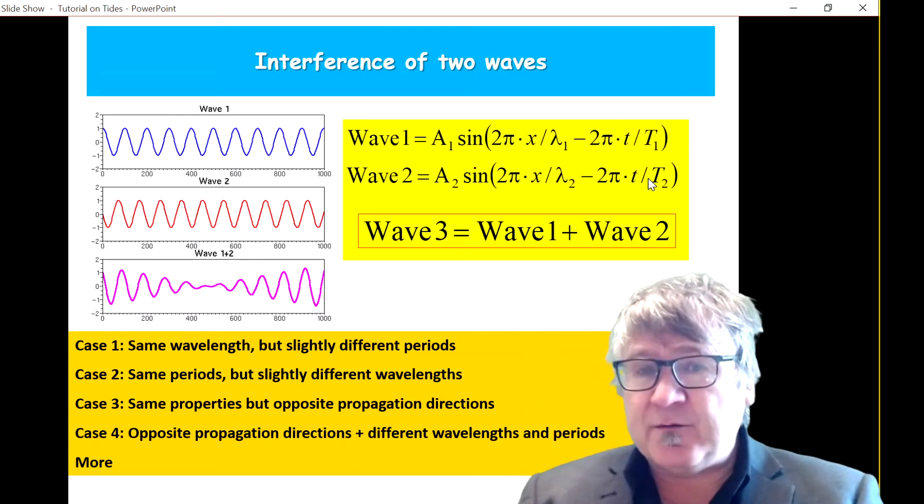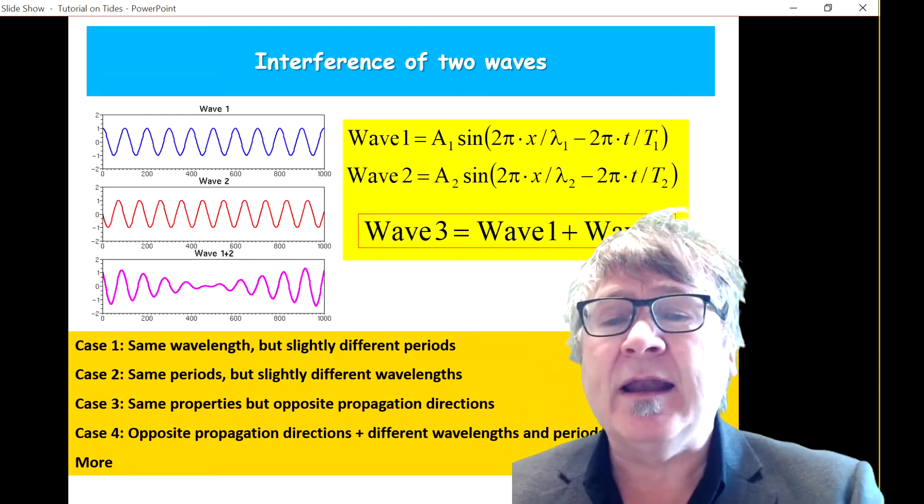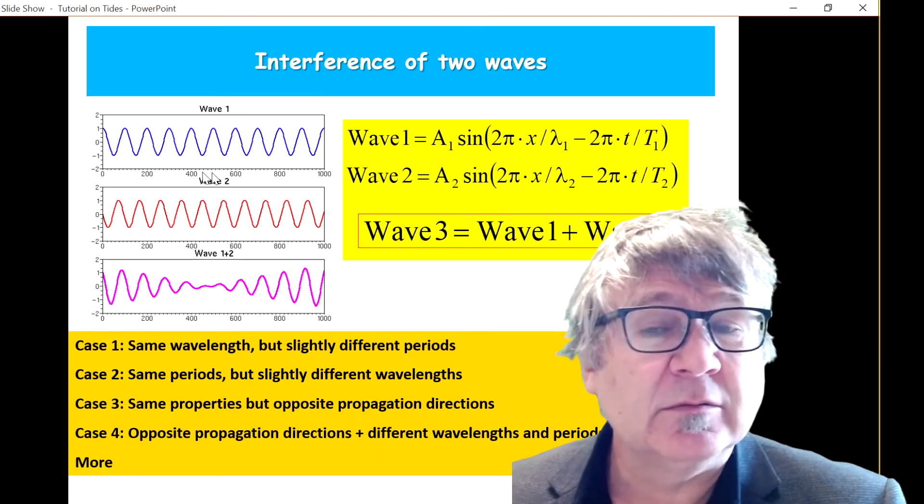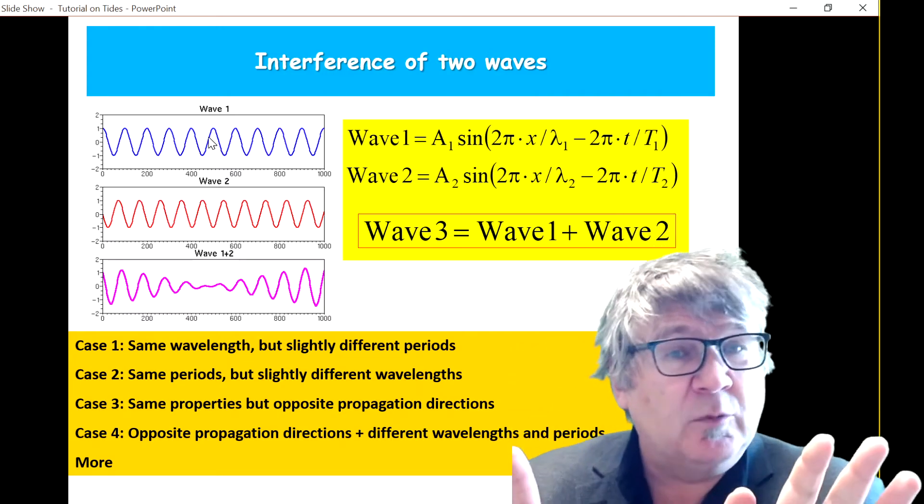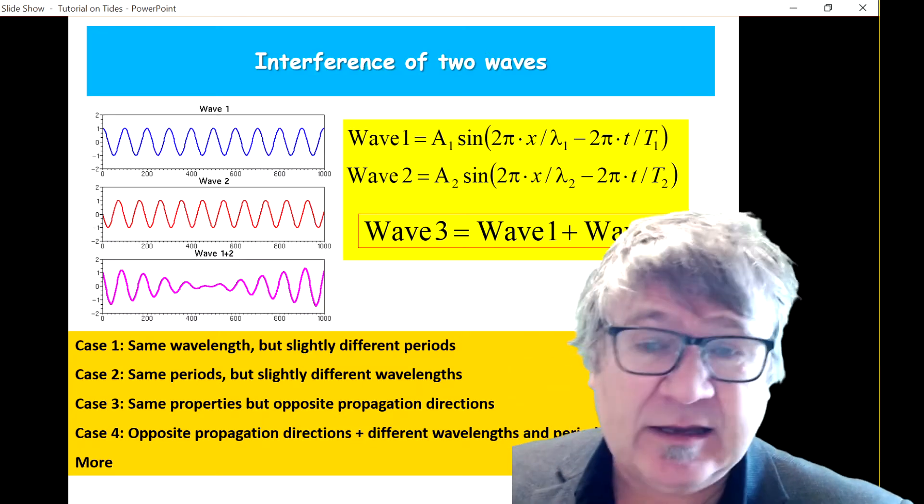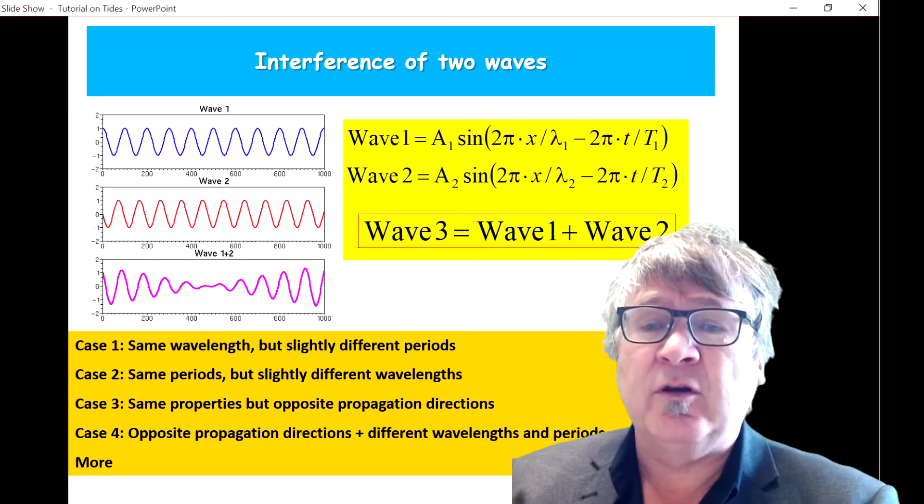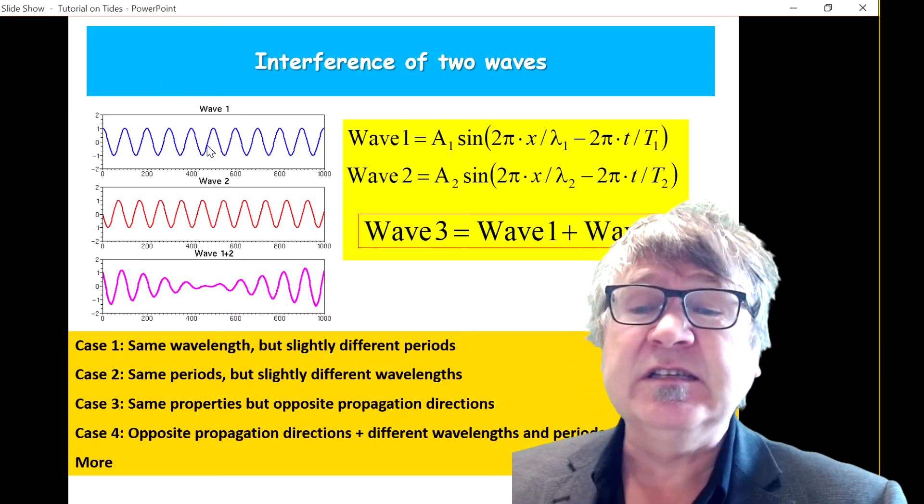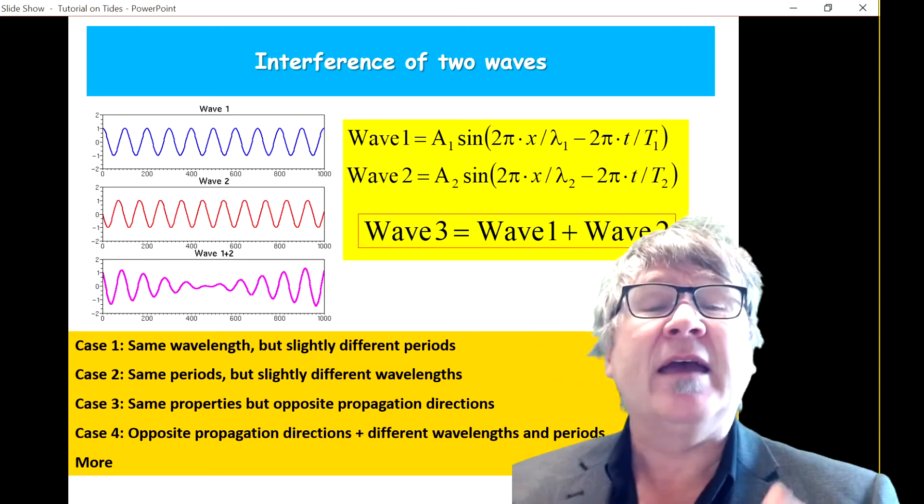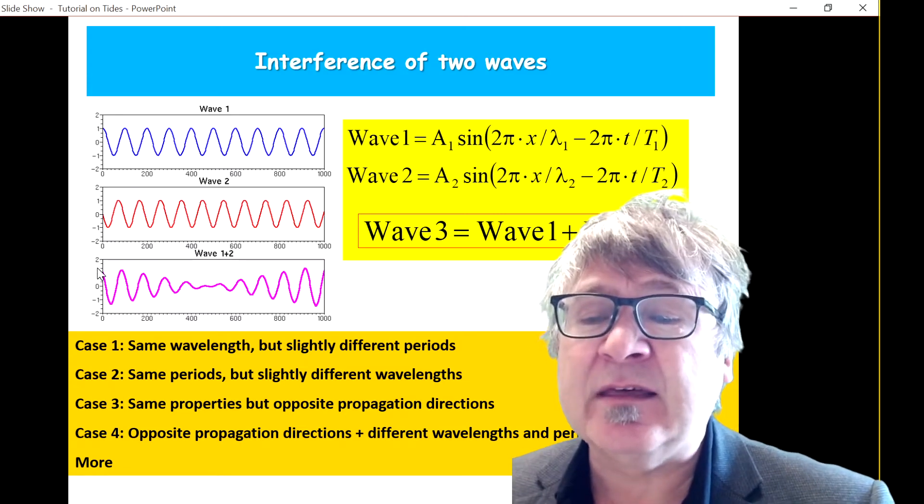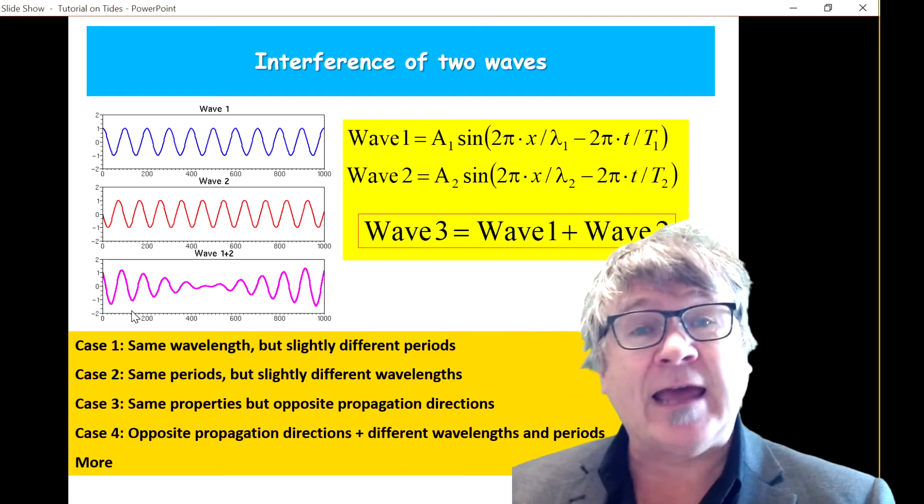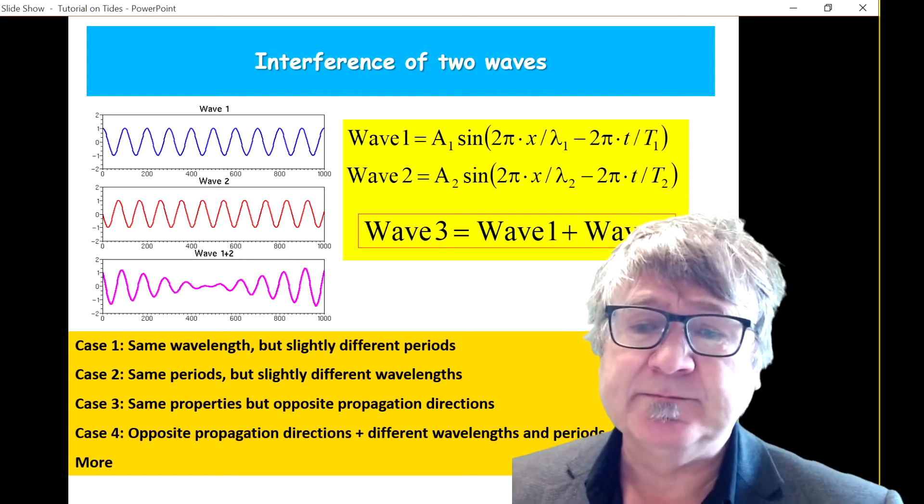And then what we call the interference is the sum of wave 1 plus wave 2. And I can already show you one example. It's just a still image. We still have to see the waves in action. It's just at a chosen time. But you can see that there are regions where the waves actually amplify each other. They sit on top of each other. And you get an amplitude exceeding 1. You can see that here's a slight increase above 1. This is an area here where you have, we call it a positive interference or a constructive interference.